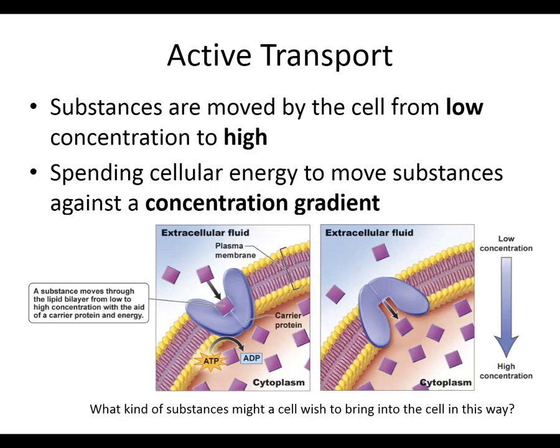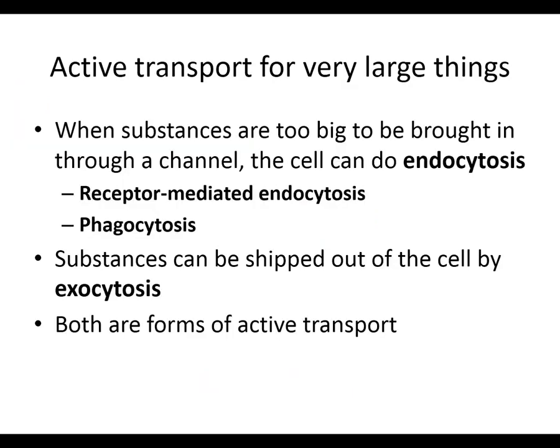Active transport is where substances are moved by the cell from a low concentration to a high concentration — against the concentration gradient. This requires energy. In the picture, we have purple squares outside the cell in low concentration and many inside the cell; we want to move more in against the gradient. That energy usually comes from ATP.